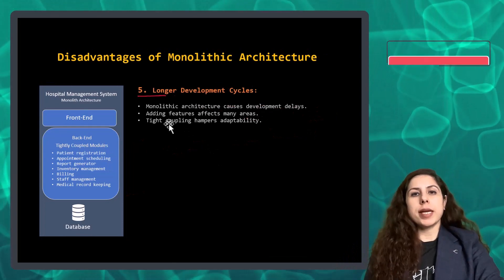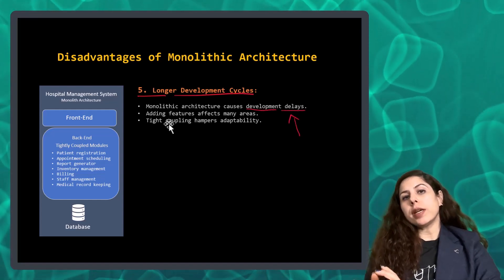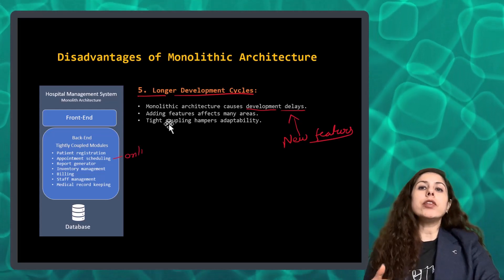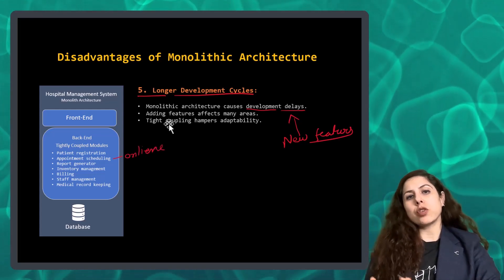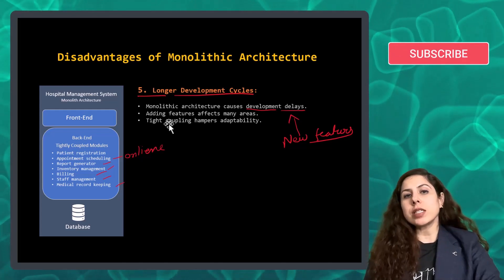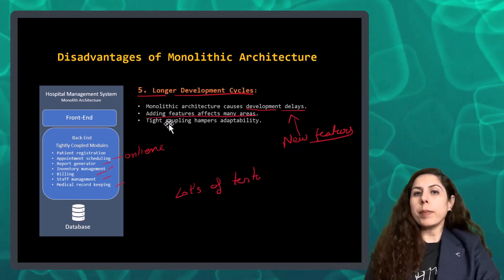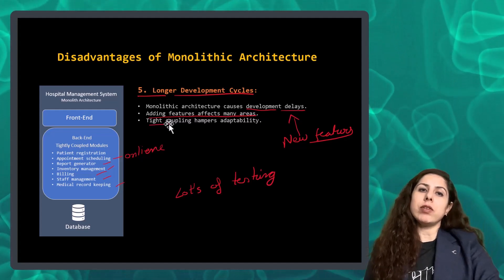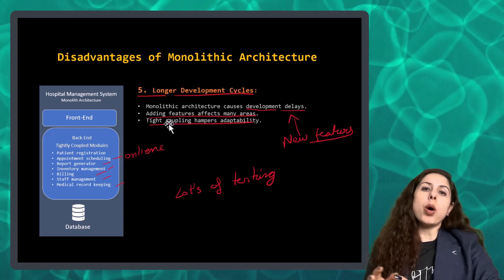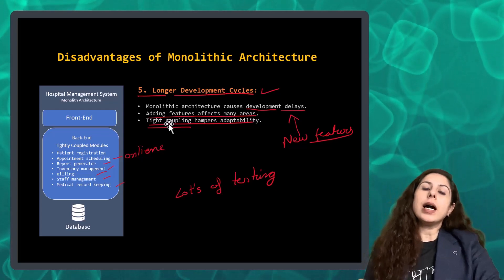Fifth, longer development cycles. Introducing new features in monolithic applications takes longer due to their intricate, interconnected codebase. For example, adding online appointment scheduling to a hospital management system affects various parts of the application, requiring careful handling to prevent issues. Extensive testing is necessary since changes in one area can impact the entire system, delaying feature deployment and potentially causing disruptions in existing functionalities like billing.